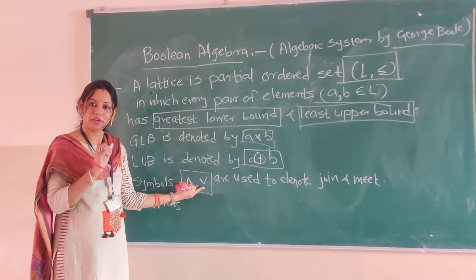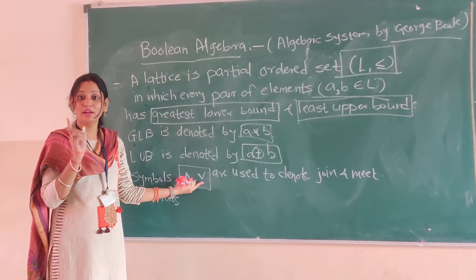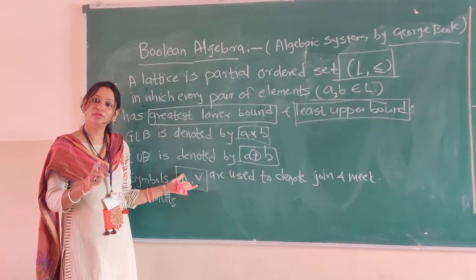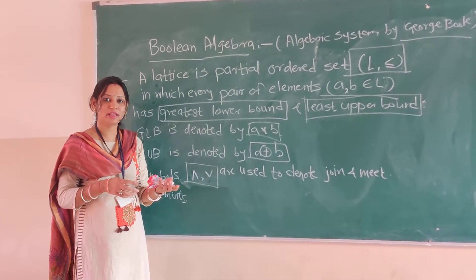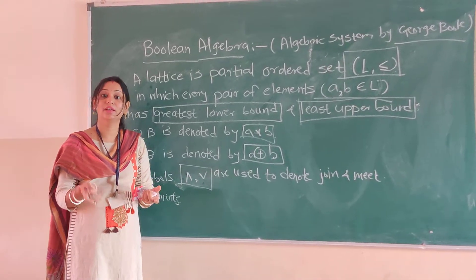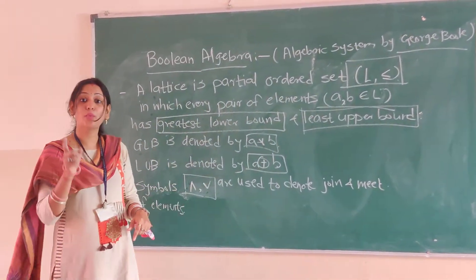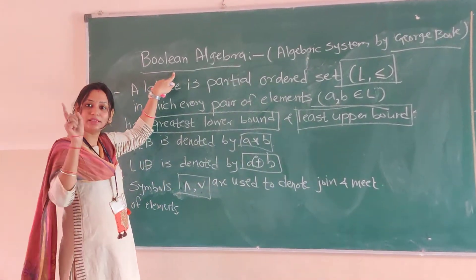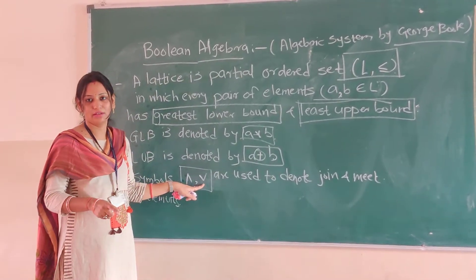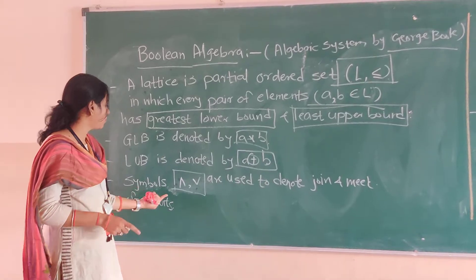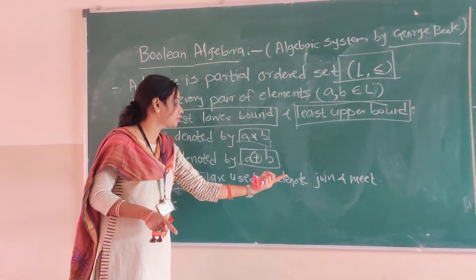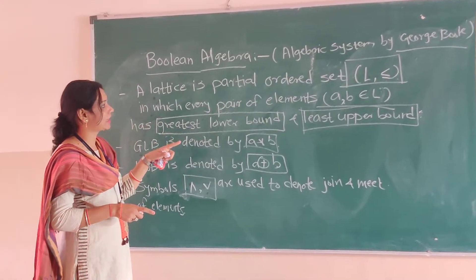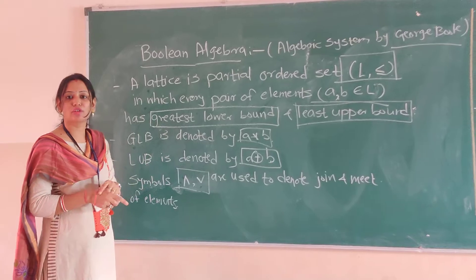These symbols used in the lattice — we cannot call them conjunction and disjunction. Remember, conjunction and disjunction symbols may look the same, but conjunction and disjunction are terms used when talking about propositions. When talking about algebraic systems and Boolean algebra, these are called join and meet. Keep in mind: the symbols are used to denote join and meet of the particular elements.